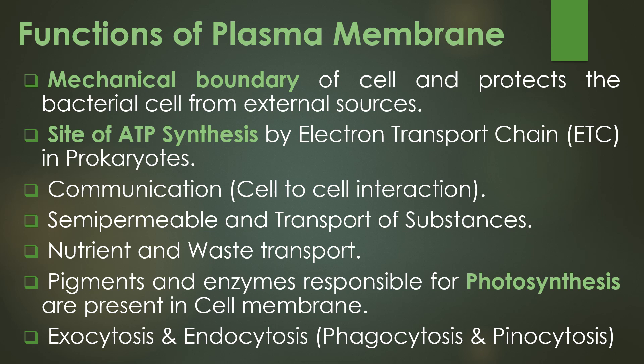Usually in eukaryotes, the electron transport chain reaction takes place in the mitochondria. In prokaryotes, mitochondria are absent, so the electron transport chain reaction takes place in the plasma membrane, making it the site of ATP synthesis in bacteria. The third function is cell-to-cell interaction and communication. The plasma membrane is also semi-permeable in nature and is involved in the transport of substances, particularly nutrients and waste.